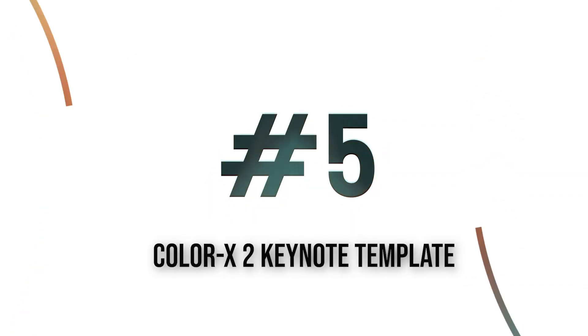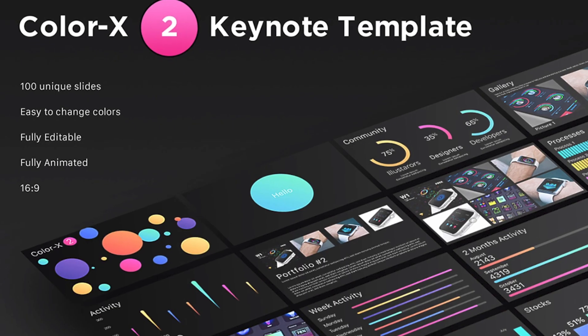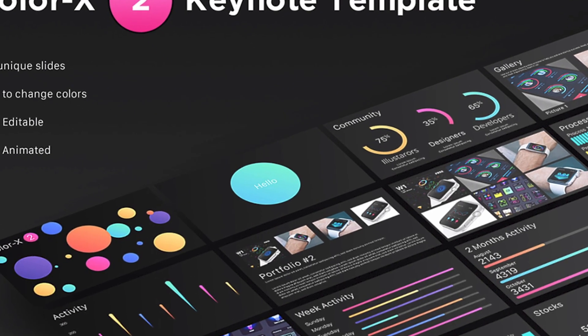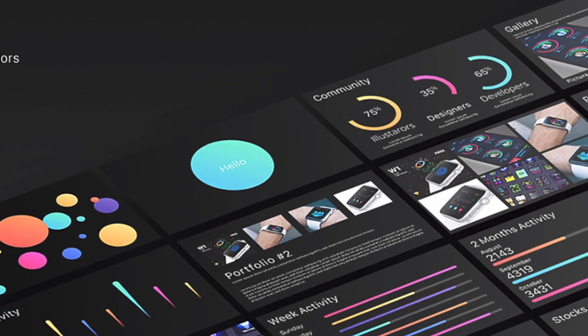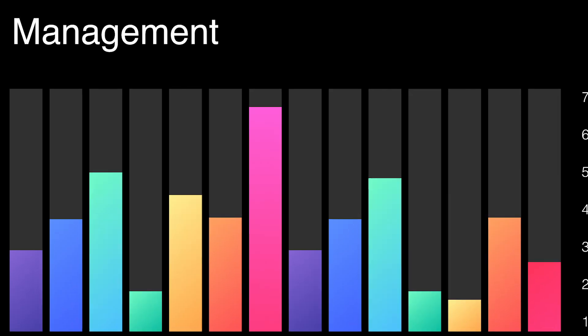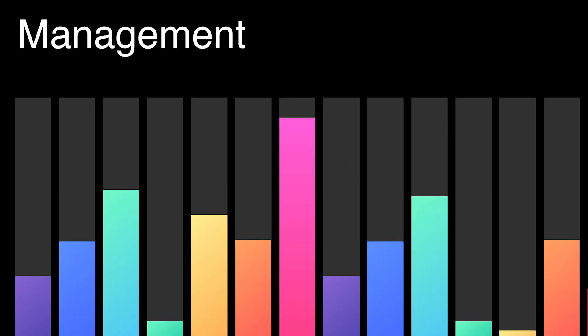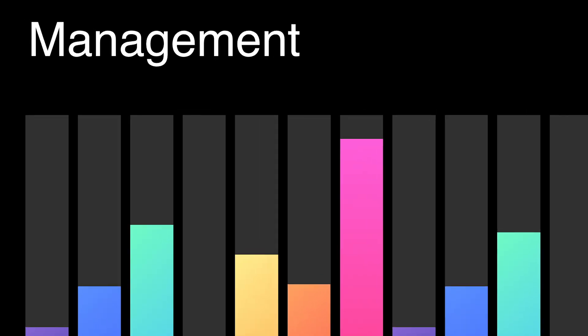A dark backdrop is the key feature of Color X2 Keynote Template. In total, it comes with a hundred animated slides for all of your presentation needs. These feature charts, images, infographics, and more.